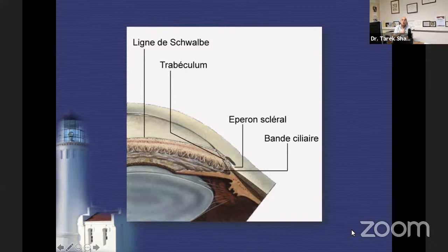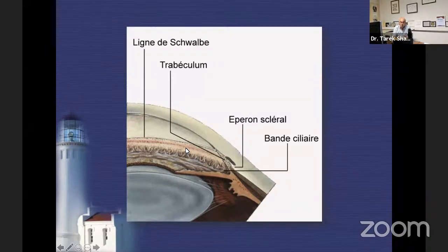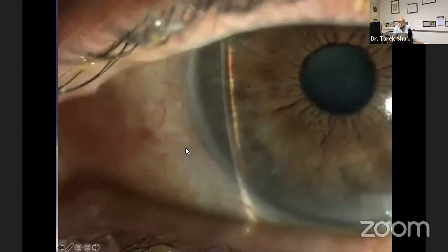I know this is unorthodox, and some people look at the angle in a much more sophisticated way, but I'm a very pragmatic fellow and I have not seen a significant advantage in my practice in describing the angle in very complicated ways. To make it very simple: look for the trabeculum and see if it is open or not.